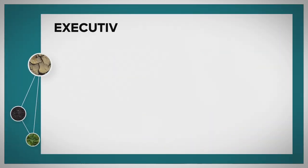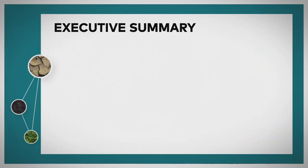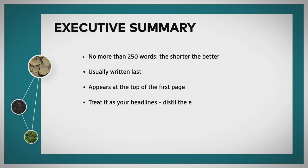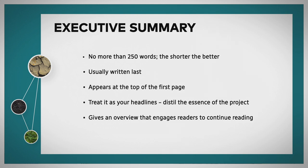The executive summary is normally no more than 250 words — the shorter the better. You'll probably write it last, even though it appears at the top of the first page and is the first thing people will see. Treat it as your headlines; distil the essence of the project and give an overview that encourages your reader to keep on reading.